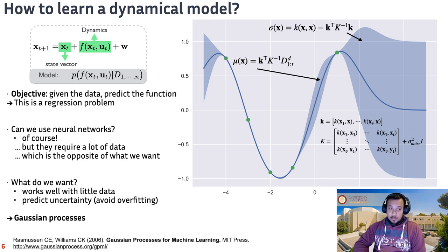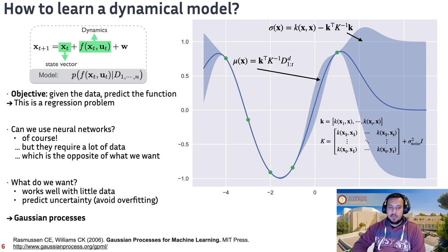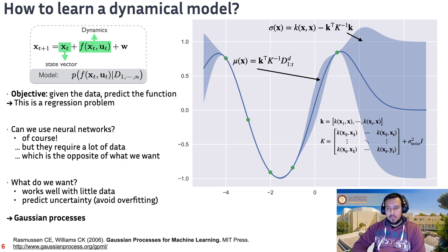The first thing that comes to mind is to use neural networks, and we can use them, but the main issue is that they typically require a lot of data — which is exactly the opposite of what we want, since we want adaptation that works with very little data. Also, when we have very little data, we would like to predict uncertainty, because that way we can more easily avoid overfitting. A very good tool for this is Gaussian processes. They capture uncertainty very nicely and can be described compactly mathematically. They fit very well to this problem of learning with very little data while also providing uncertainty estimates.